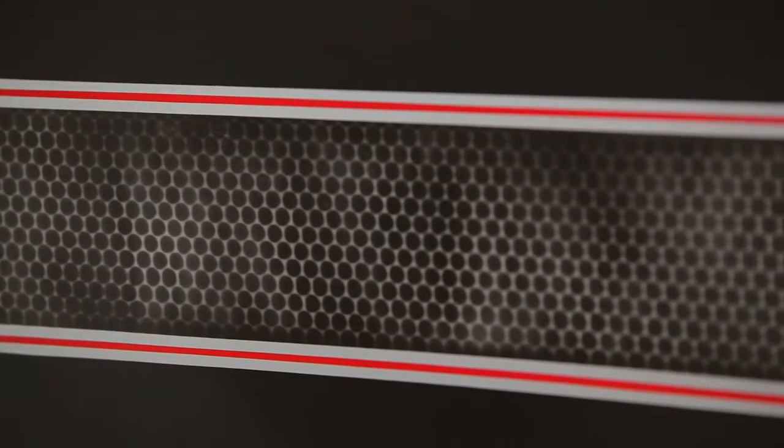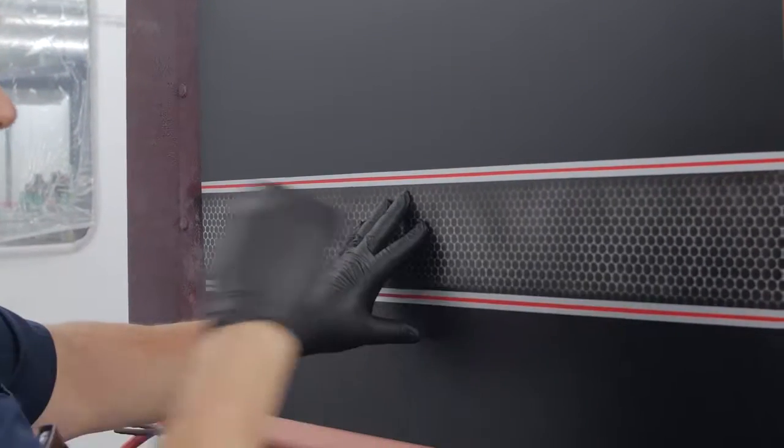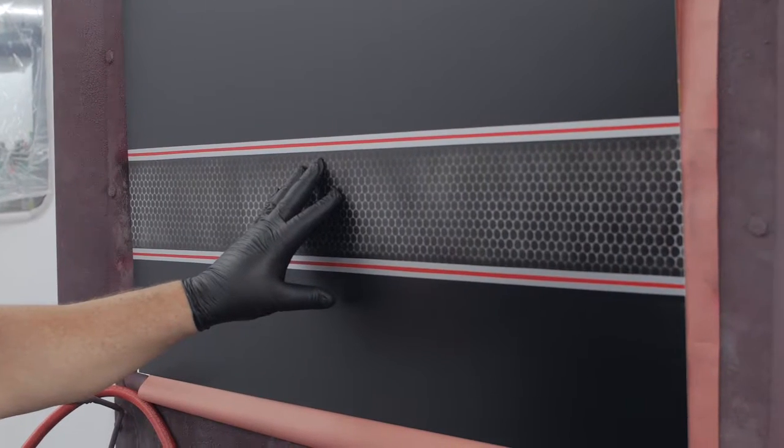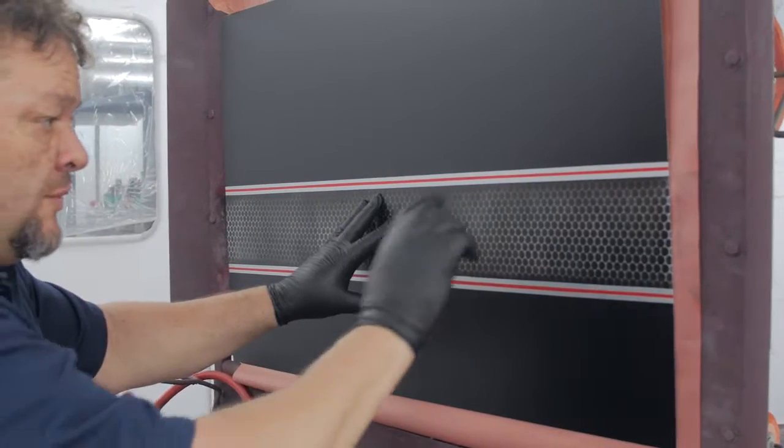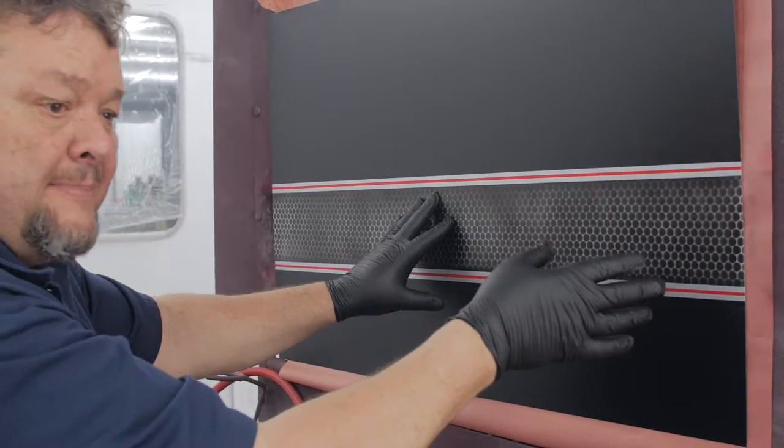So really very quickly you're able to create a pattern that can create a particular effect. Now we could have done this a lot lighter. It wouldn't have been so dark. We could have put a candy coat over the top of that and made a really neat looking pattern underneath, depending on how you want to use it in a stripe.